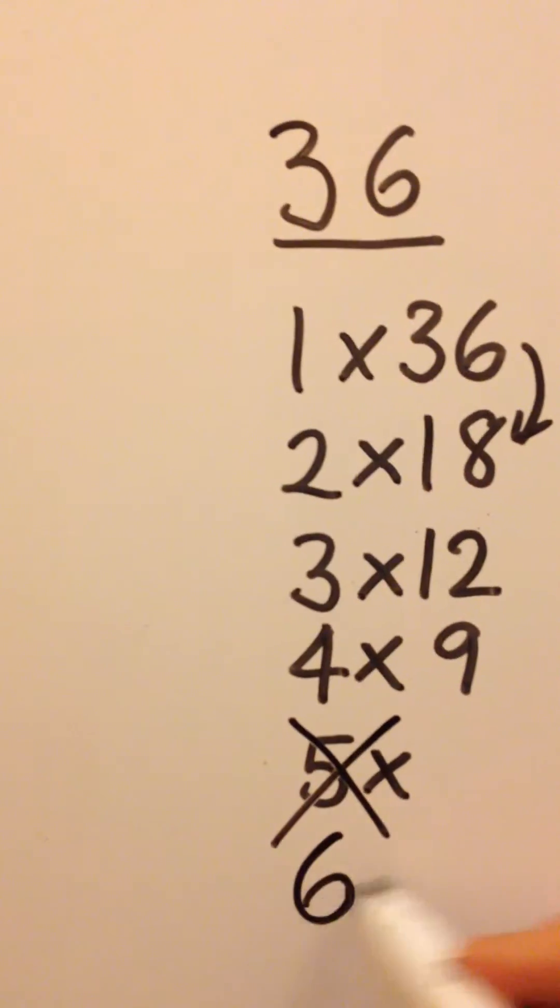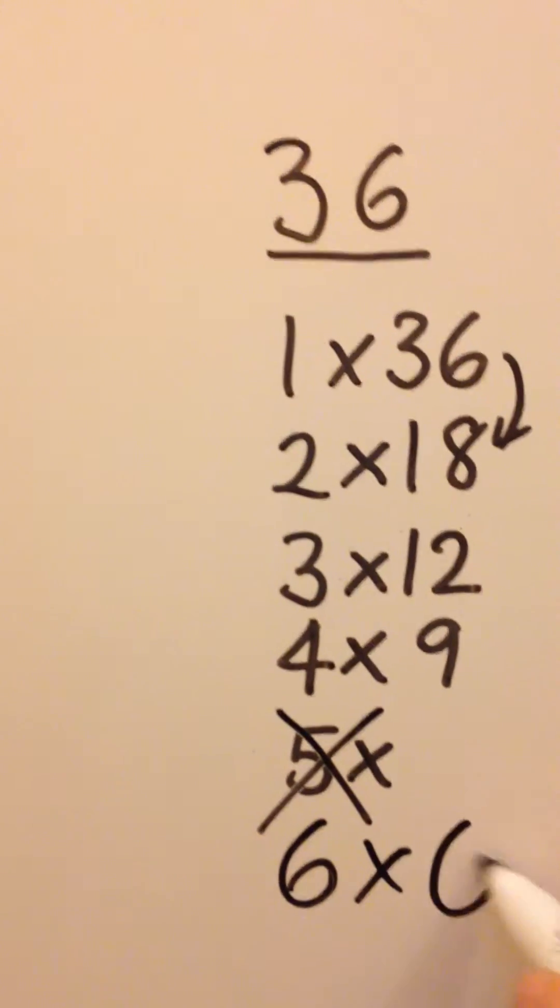When I come to 6 times, that's when I notice it's a square number. It's 6 times 6.